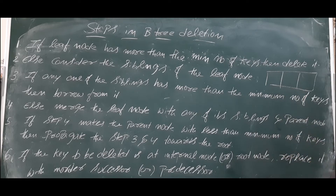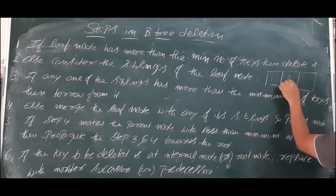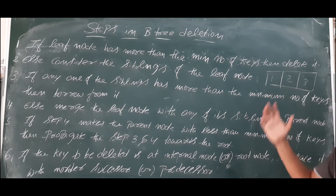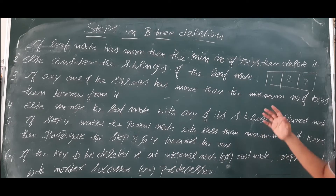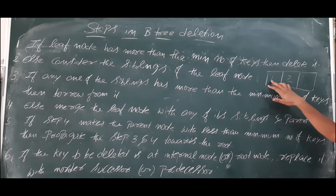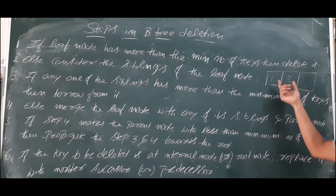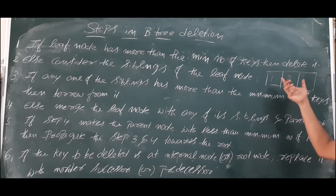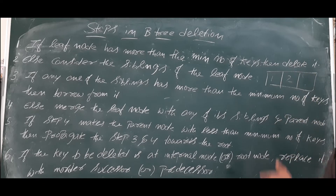For example, suppose we have a node that should have a minimum of three keys, and it currently has three keys: 1, 2, 3. Since three is the minimum, we should not delete directly from it. If we delete from it, the node will have an underflow condition. So in these cases, what we do depends on whether it is a leaf node or a non-leaf node.